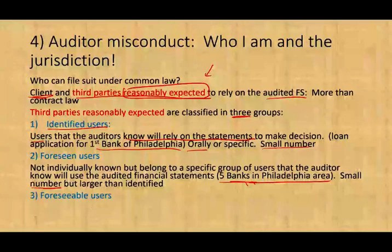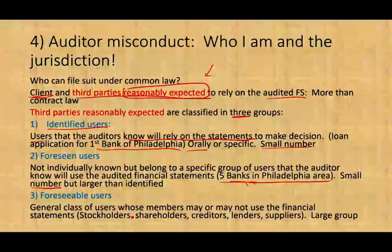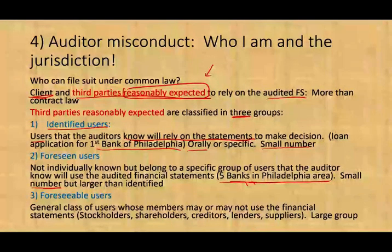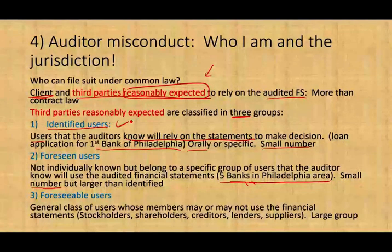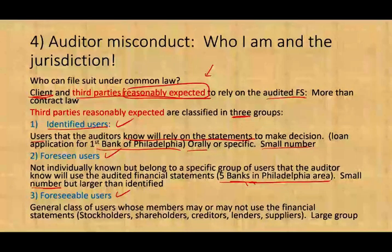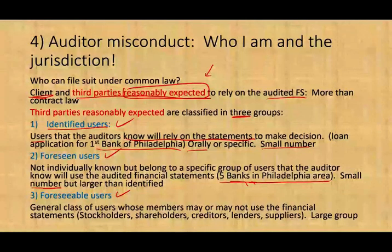The third group is foreseeable users — a general class of users whose members may or may not rely on the financial statements. This is a very large group. Why does this matter? Because depending on who you are in the lawsuit — identified, foreseen, or foreseeable user — and your jurisdiction, determines what claims you can bring against the auditor.